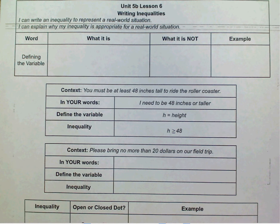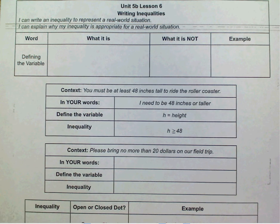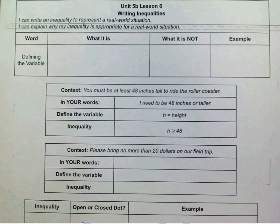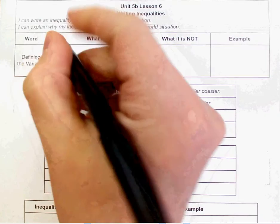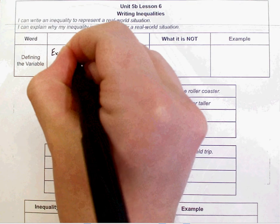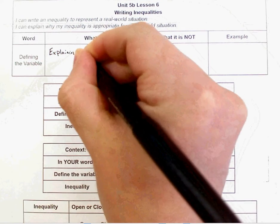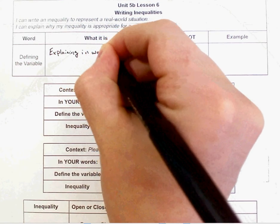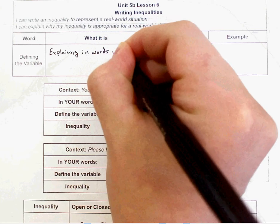We've talked a lot about defining the variable, about what it is and what it should not be. But this is the first time we're actually going to go through and give you a definition. So defining a variable is explaining in words what the variable represents.